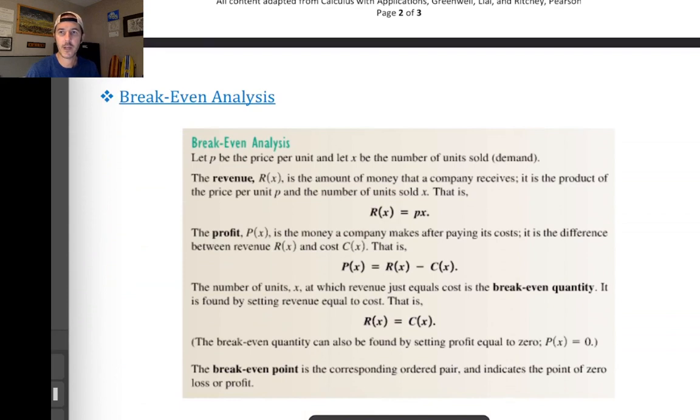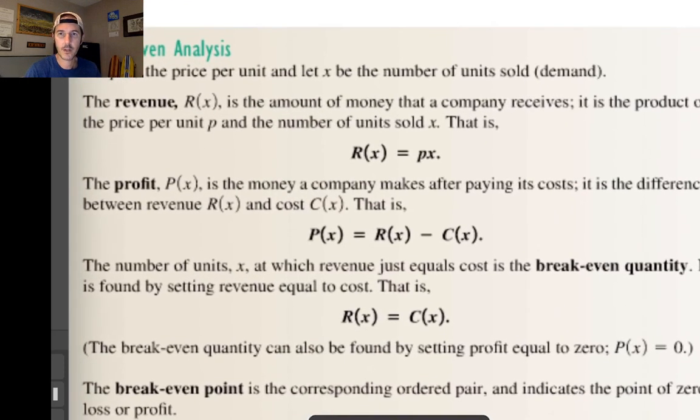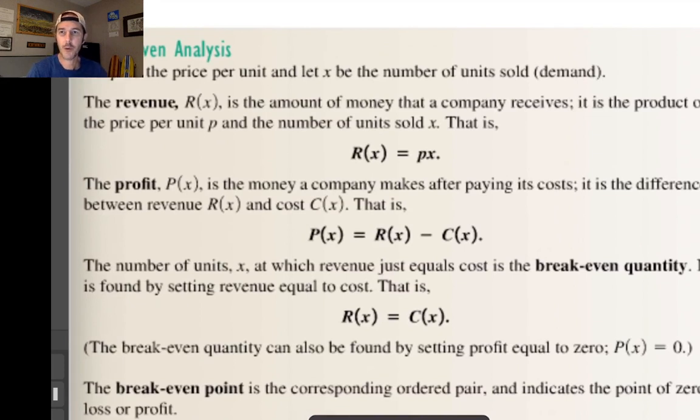The last little subtopic in this section is called break-even analysis. And this is very similar to the process that we were just going through in terms of trying to find an equilibrium price. Except here, the equation that you're seeing right in the middle of your screen is the profit equation. And profit is found by taking your revenue, which is the amount of money coming in. In other words, the amount of money that actually comes from your customers and goes into the register. But then, of course, you have to subtract out your cost.